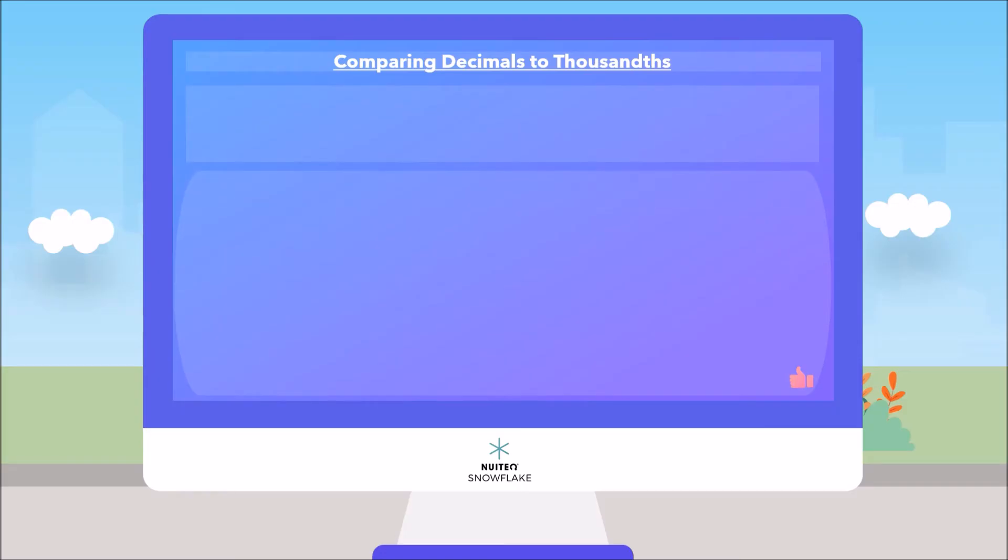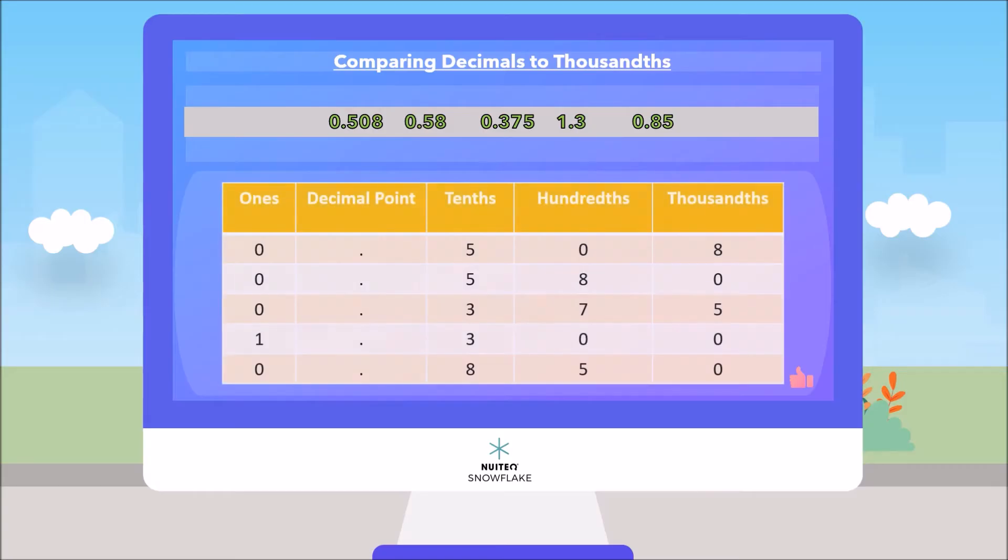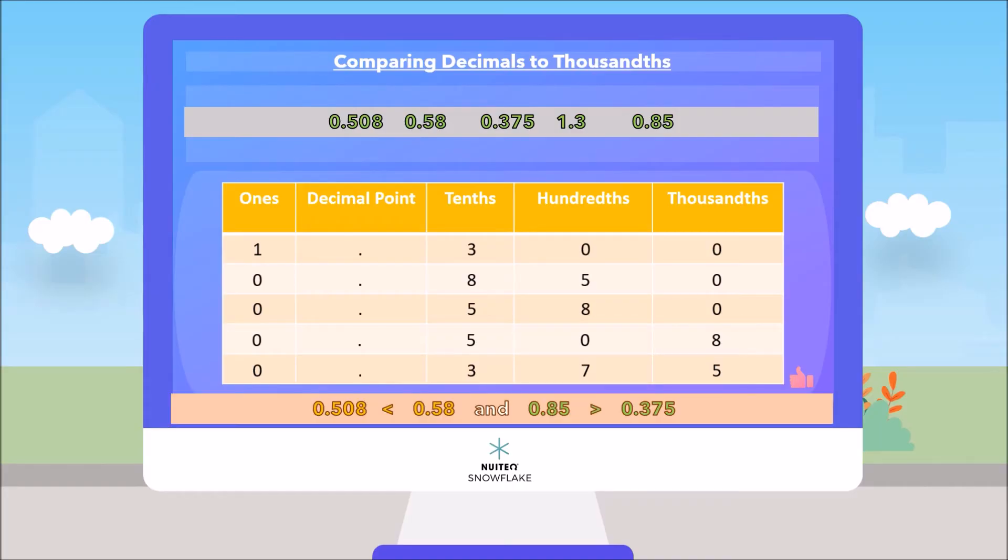For example, we want to order these decimals from highest to lowest. 0.508, 0.58, 0.375, 1.3, and 0.85. If we follow these steps, we will end up having them organized like this. So, we could say that 0.508 is less than 0.58, and 0.85 is greater than 0.375. Easy, right?